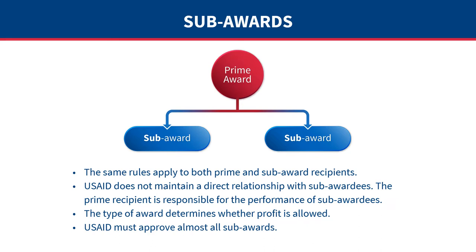A prime recipient may use an established sub-award selection process, which may include issuing its own request for applications or proposals. The type of award determines whether profit is allowed. For example, if you hold a sub-grant under any type of prime contract, you may never charge profit; however, the prime recipient may pay a fair and reasonable profit to sub-contractors providing goods and services under a sub-contract. USAID must approve almost all sub-awards, either when an organization is selected for an award or on an as-needed basis after a prime award is in place.